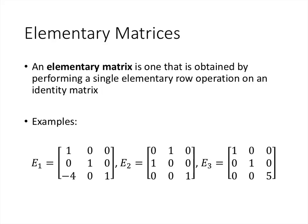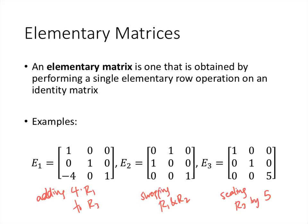So what's an elementary matrix? An elementary matrix is one that you get by starting with the identity matrix and doing one row operation. For example, matrix E1 is the result of adding 4 times row 1 to row 3 — that's the replacement operation, where we multiply a row by a scalar and add that multiple to another row. E2 is the result of swapping row 1 and row 2, and E3 is the result of scaling row 3 by a factor of 5, multiplying that row by 5.